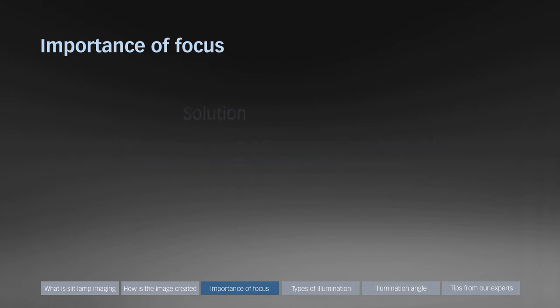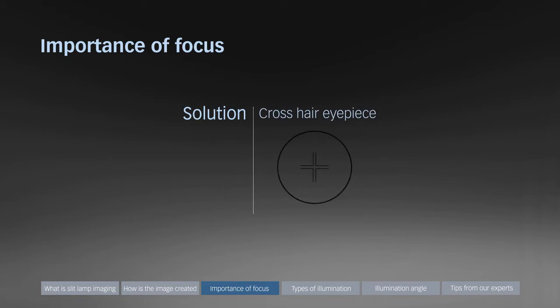To help overcome this problem, Haag-Streit has developed a special imaging crosshair eyepiece. A crosshair reticule indicates the correct adjustment of the eyepieces, thus a perfect focus for the camera is guaranteed.